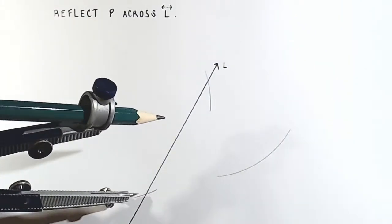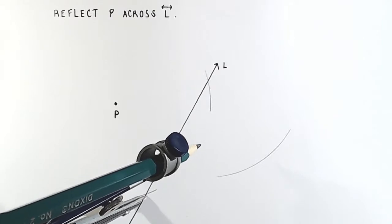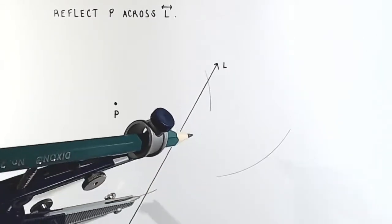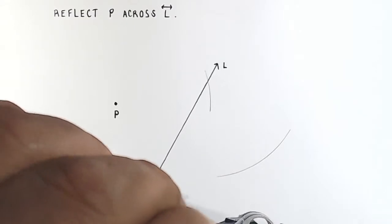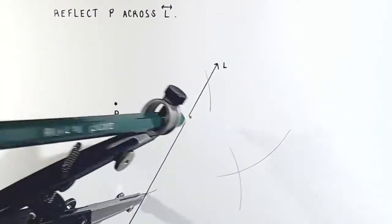Now place your compass point on the other place where the other arc crosses the line and draw another arc until you see those arcs intersect.